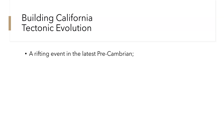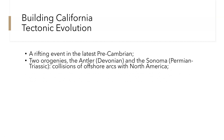In the latest Precambrian we saw a rifting event. This is the tectonic evolution of California. We see two orogenies: the Antler Orogeny in the Devonian and the Sonoma Orogeny in the Permian-Triassic. The collisions of offshore arcs with North America helped generate these orogenies. Remember, orogenies are mountain building events.